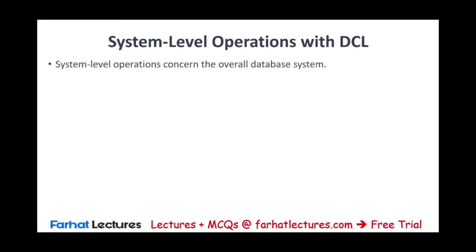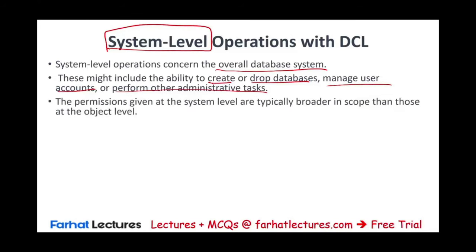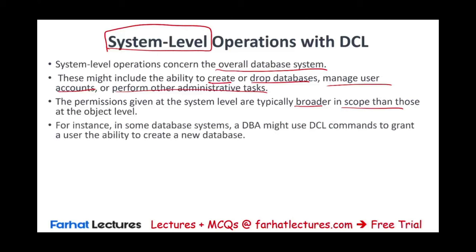What is a system-level operation? System-level means the operation concerns the overall database system. This might include the ability to create or drop — drop meaning permanently delete — the database, manage user accounts, or perform other administrative tasks. These permissions are broader in scope than those at the object level. For example, I might give you access to the whole database so you can do anything within it — that's a system level.